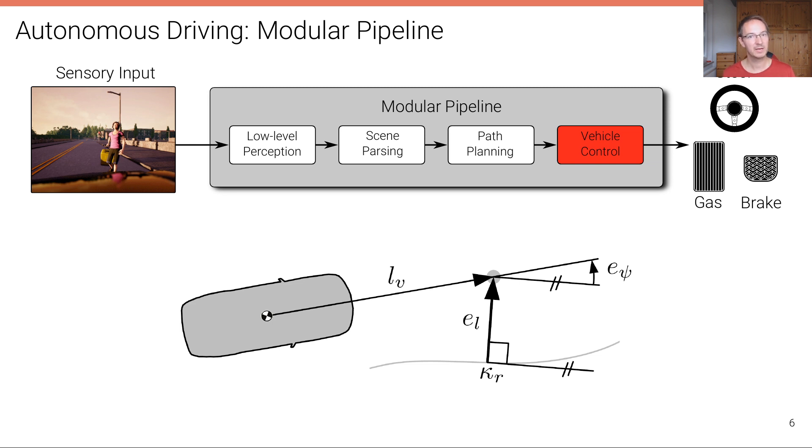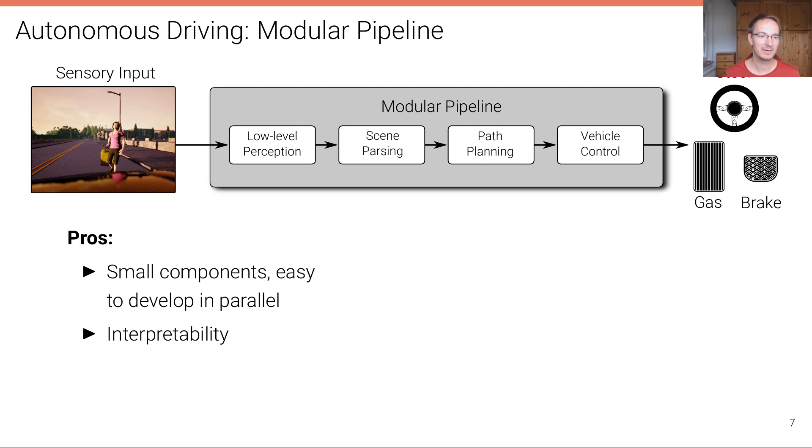Once a path has been planned, the path is then executed via a vehicle controller where the vehicle is controlled such that it keeps its distance and speed close to the trajectory that has been determined by the path planning stage. The advantage of a modular pipeline is that it's relatively easy to develop in parallel because there's many small components and it's quite interpretable because all of these components have been designed by humans so the interfaces are well known. They have been specified in fact.